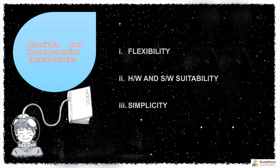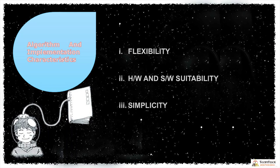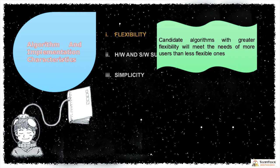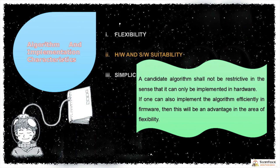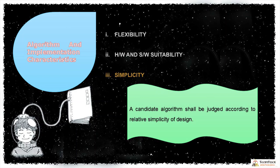The third criteria is algorithm and implementation characteristics, which includes flexibility, hardware and software suitability, and simplicity. Flexibility means candidate algorithms with greater flexibility will meet the needs of more users. Hardware and software suitability means the candidate algorithm shall not be restrictive — it must be implementable in both hardware and software, and if it can also be implemented efficiently in firmware, that is an advantage. Simplicity means the algorithm shall be judged on relative simplicity of design — it should be simple and easy to understand.